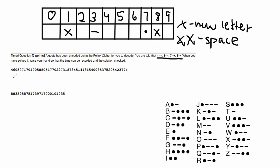The first step is to fill out all the numbers you already know. Under all the 1s I'm going to put X, under all the 3s I'm going to put a dash, and so on. Now I've filled out everything I already know. The next step is to find all the double X's — those are word spaces. I can see double X's here, here, and here.